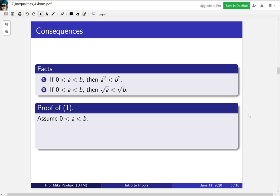So let's prove number one using the axioms. This is an if-then statement, so we start with the if part. Next, we know that since a is positive, we can multiply through by a and maintain the inequality. So a squared is less than b times a.